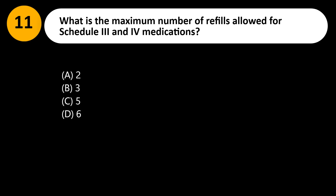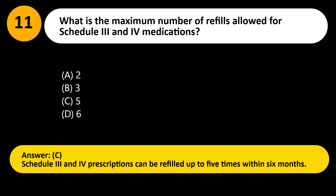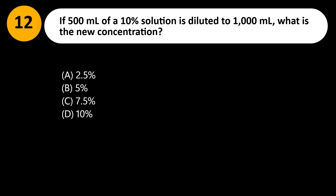What is the maximum number of refills allowed for Schedule 3 and 4 medications? A. 2. B. 3. C. 5. D. 6. Answer: C. Schedule 3 and 4 prescriptions can be refilled up to 5 times within 6 months.